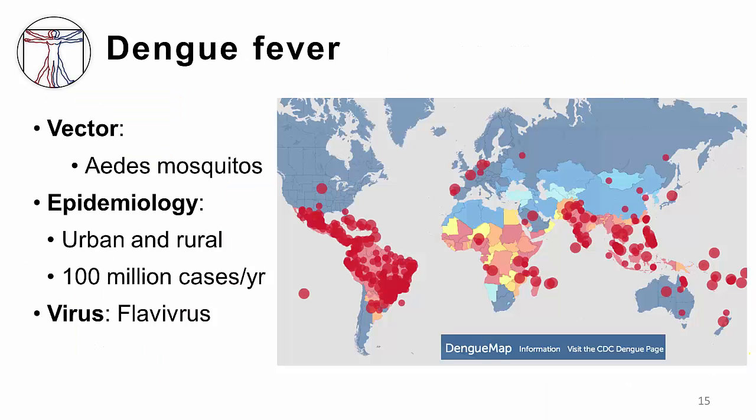Given that dengue is common, I want to spend extra time on dengue fever. Dengue is spread by the Aedes mosquito, which is a different mosquito than the one that spreads malaria. It's more of a daytime biter rather than a dusk-to-dawn biter. This mosquito can be present in both urban and rural areas, and there are over 100 million cases of dengue per year. In terms of virology, dengue virus is a flavivirus, which means it's related to other viruses like yellow fever and West Nile virus.